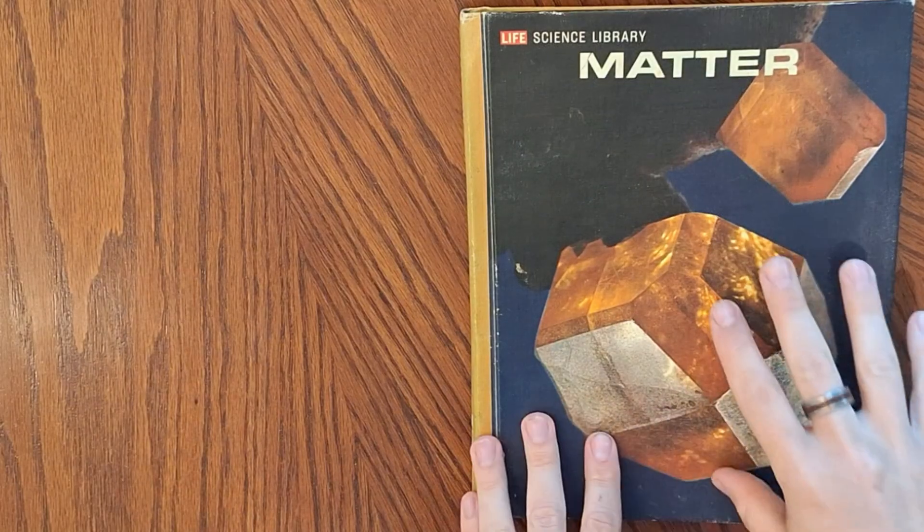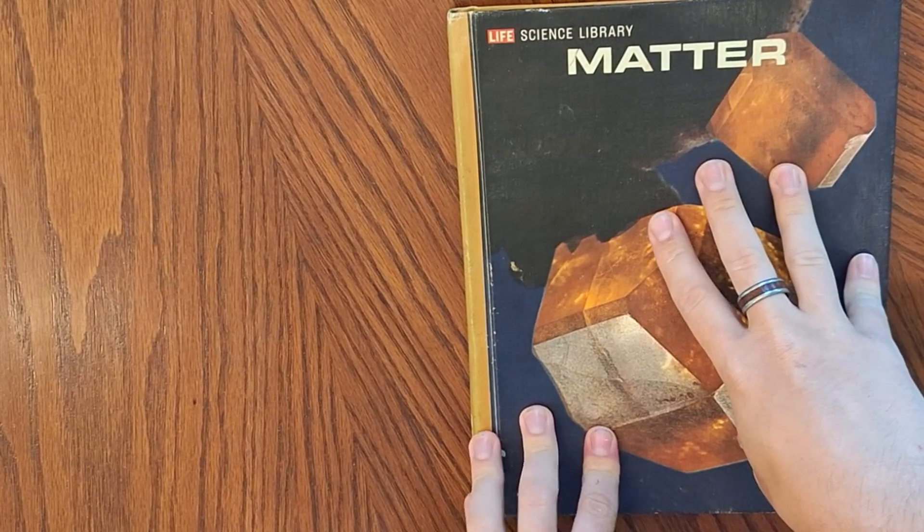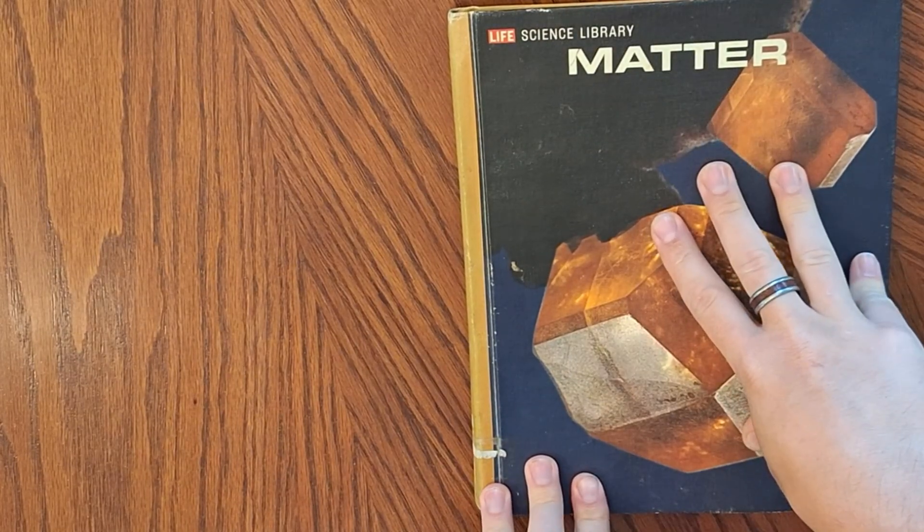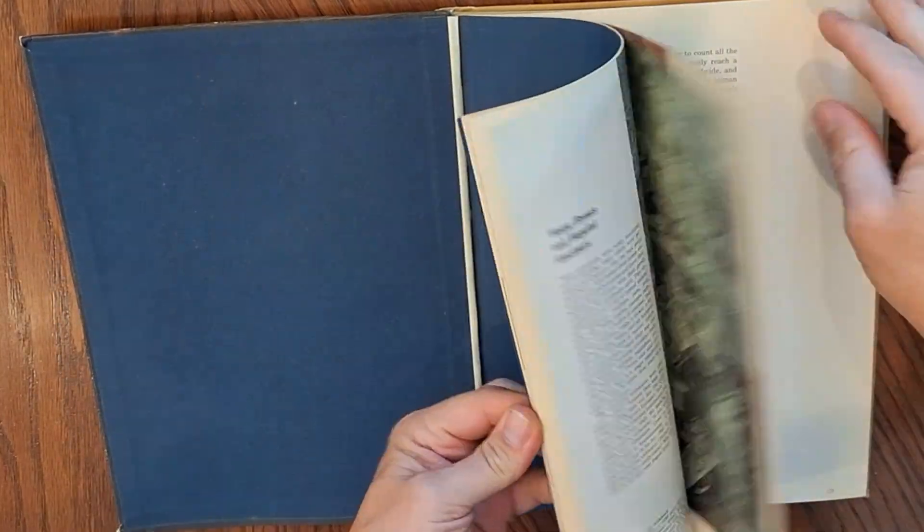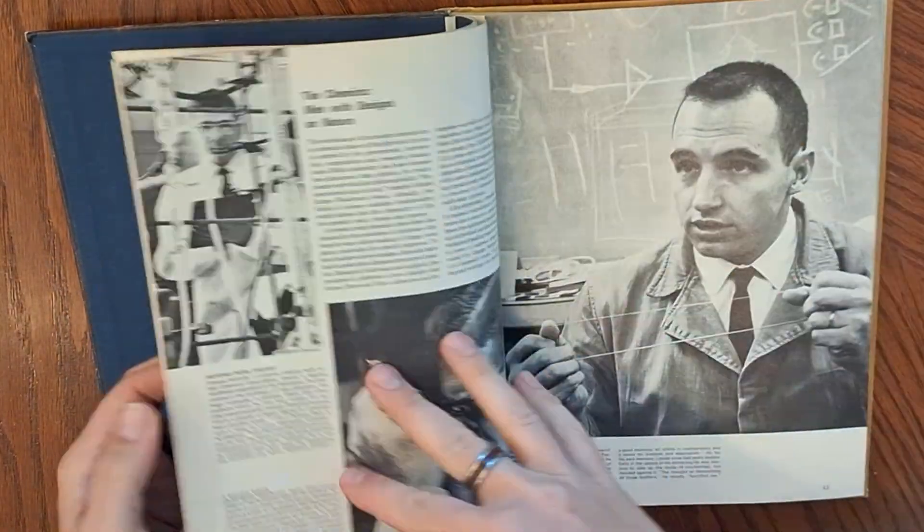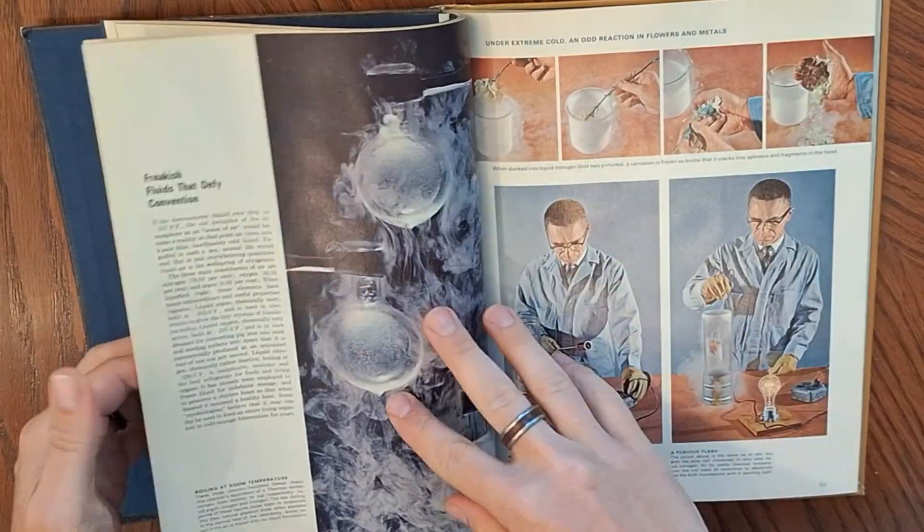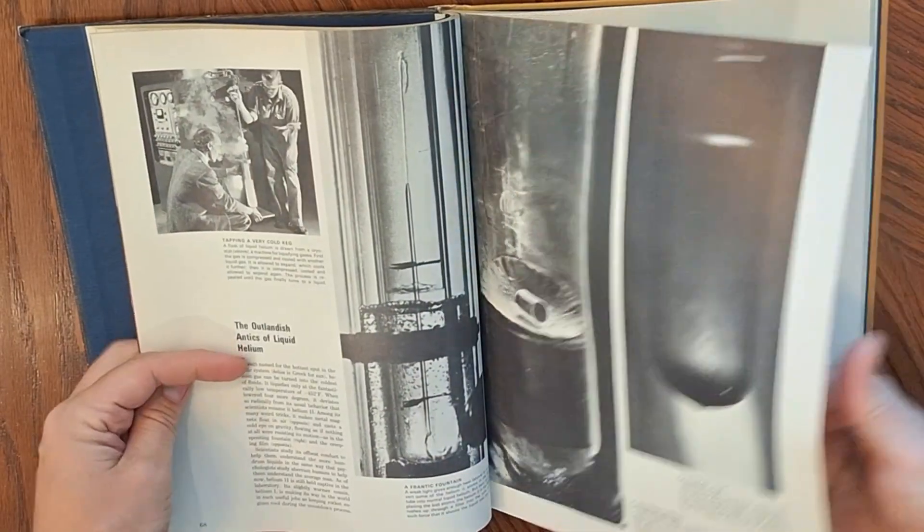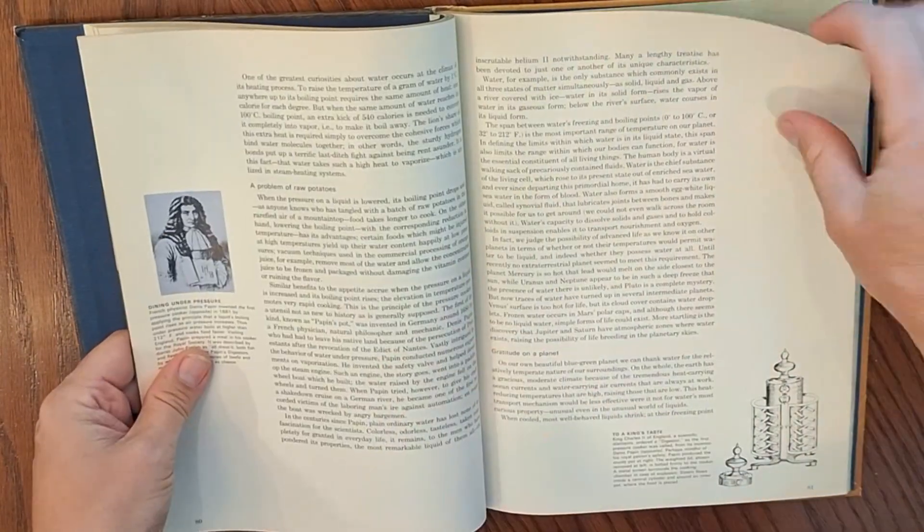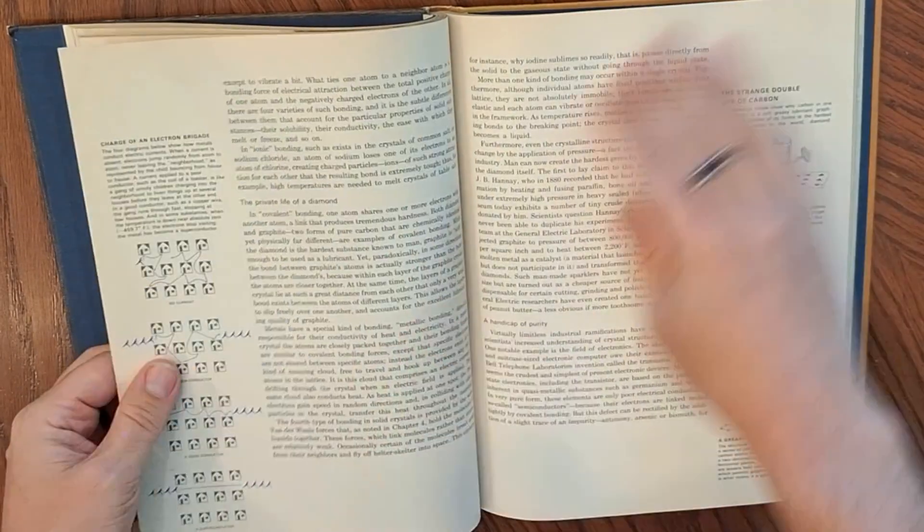And just to tell you how much of a nerd I am, guys, I had this great book when I was in grade school. I've actually kept it all these years. It's called Matter. It's really good. But it really goes through the construction of a bunch of stuff, even superconductivity, superfluids. And it was made in like 1974, so it's a little dated.